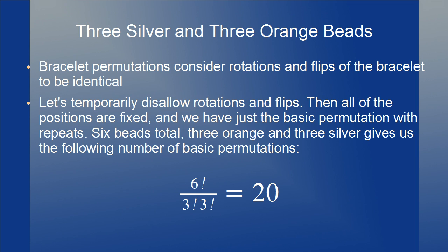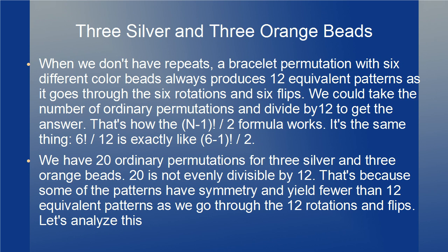Let's temporarily disallow rotations and flips of the bracelet. Then we use the standard formula for permutations with repeats and get 20 ordinary permutations for the 3 silver and 3 orange beads. If there were no repeats, all bracelets would give us 12 different arrangements as we rotated and flipped them through 12 orientations, and we could divide by 12 to find the number of bracelets. In our current situation we have 20 fixed permutations, and this is not evenly divisible by 12 — that's because some patterns have symmetry and yield fewer than 12 equivalent patterns.